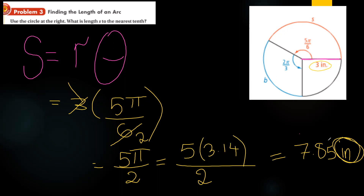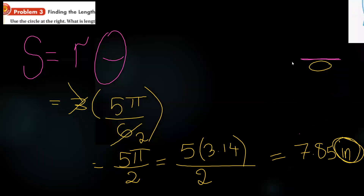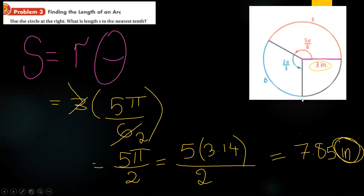To clarify: when writing an angle, keep it in terms of π as a radian. But when finding arc length, you must substitute π ≈ 3.14 to get a numerical answer — arc length is not an angle, it has physical dimensions like inches. So evaluate π numerically to find the length of the arc.